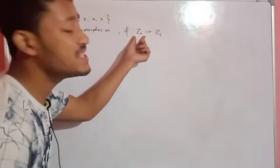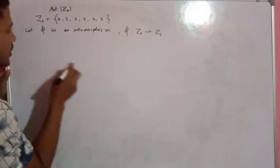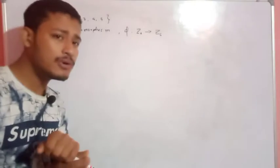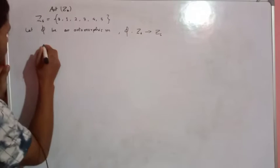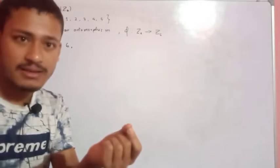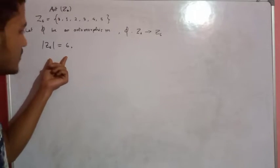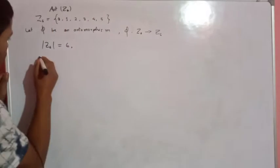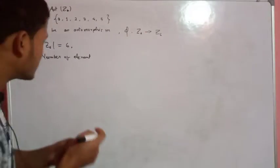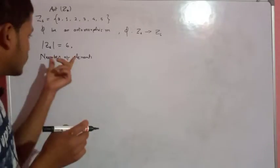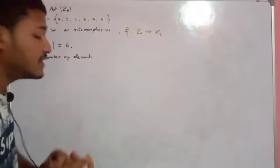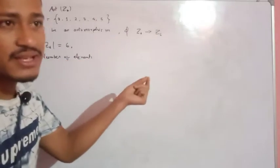Now you have to find how many generators are in Z6. Any element in Z6 is a generator of Z6 if the order of that element is equal to the order of Z6. The order of Z6 is equal to 6. So we need to find the number of elements of order 6 in Z6.